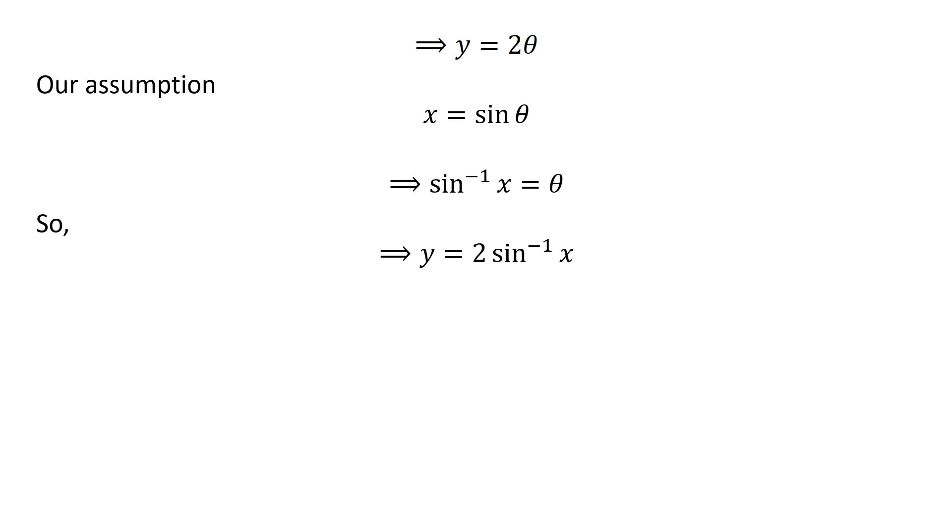Thus, simplification of inverse of cosine of 1 minus 2 times square of x is 2 times inverse of sine of x.